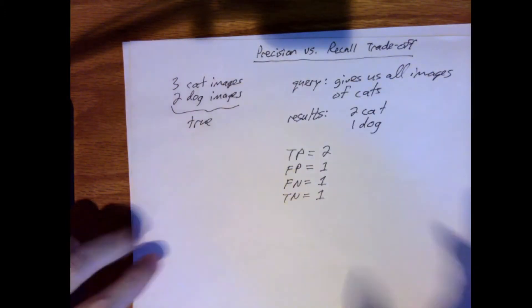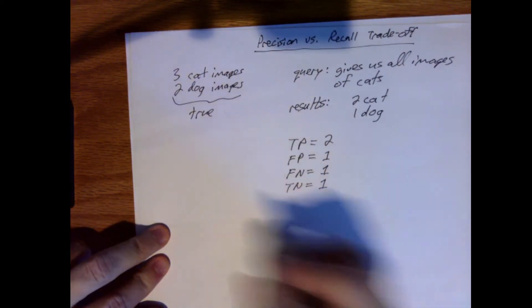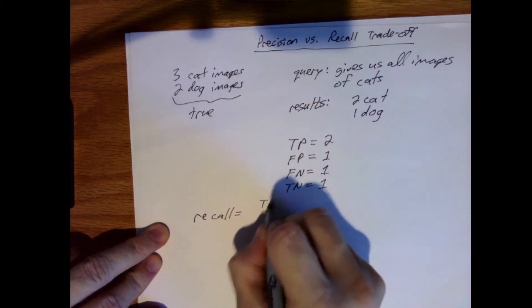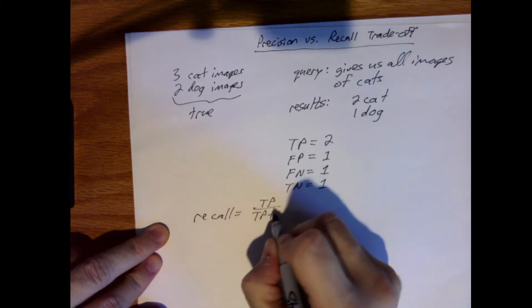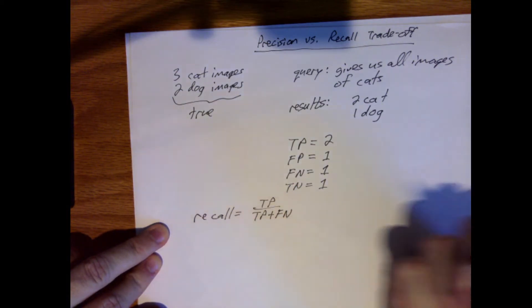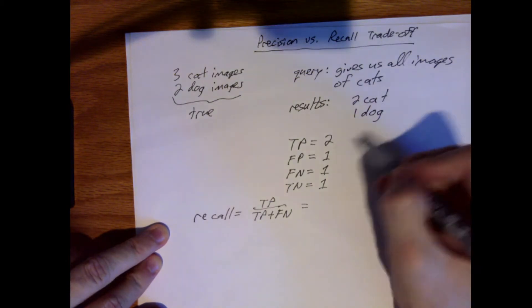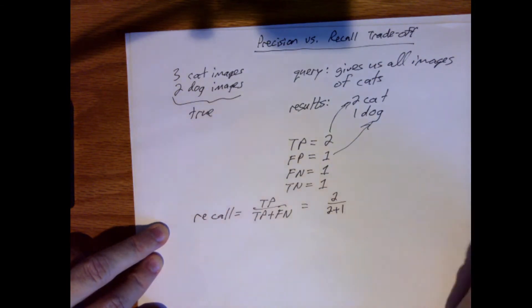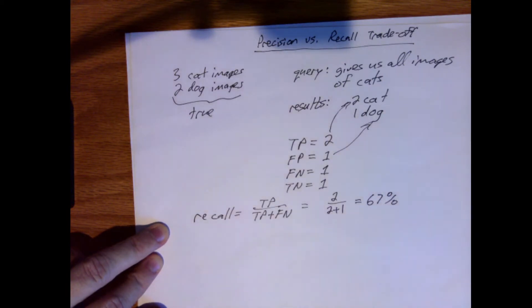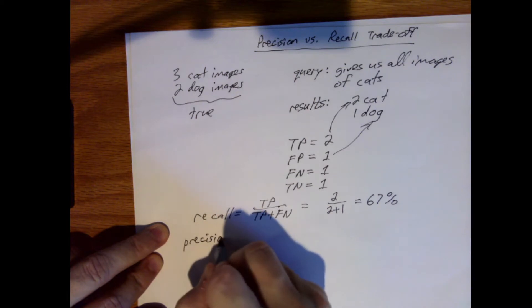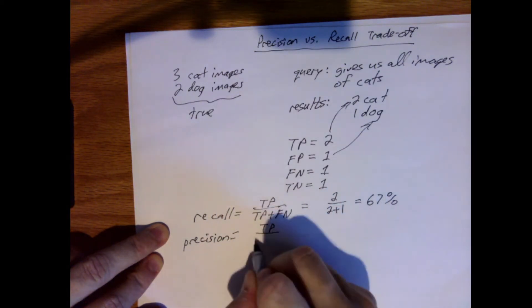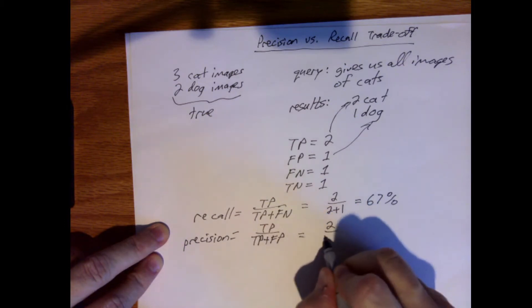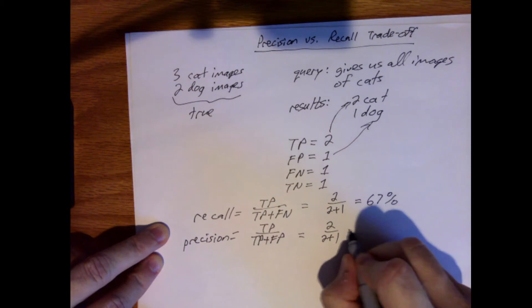Now, how do we use precision and recall to quantify our performance? Recall is equal to the true positive value divided by the true positive value plus the false negative value. So this right here is two divided by three, which is 67%. Precision is equal to true positive divided by true positive plus false positive, which is two divided by three also, which is also 67%.